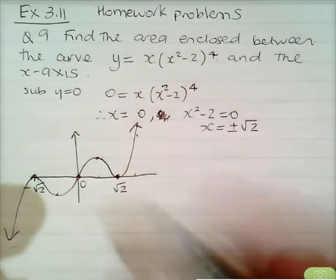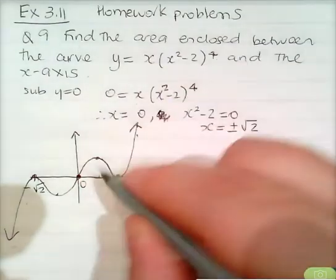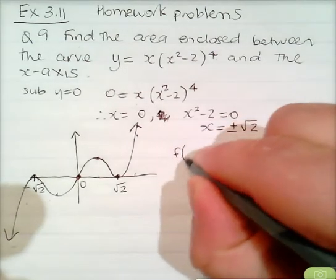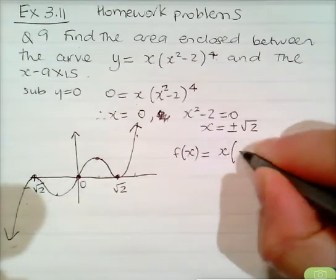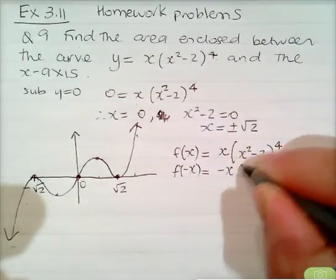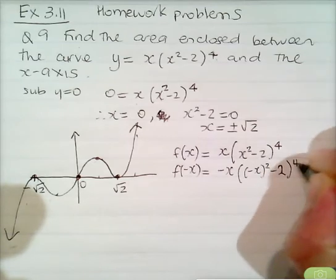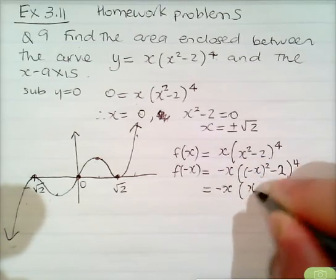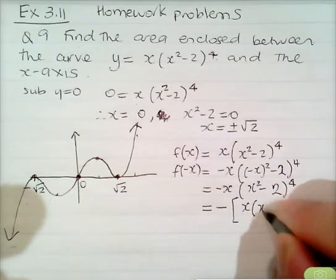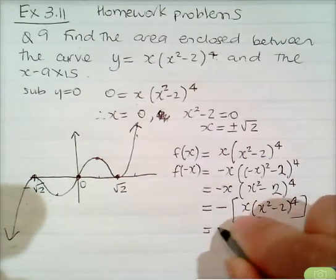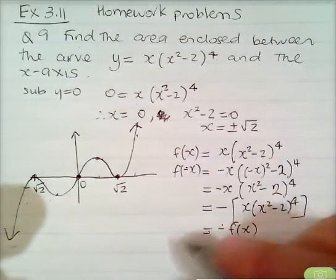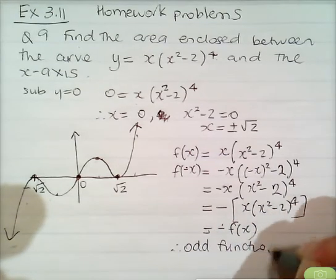The curve appears to have point symmetry about the origin, suggesting an odd function. To verify: f(x) equals x bracket x squared minus 2 to the power 4. Then f(negative x) equals negative x times negative x squared minus 2 to the power 4, which equals negative x bracket x squared minus 2 to the power 4, which equals negative f(x). So it is confirmed as an odd function.